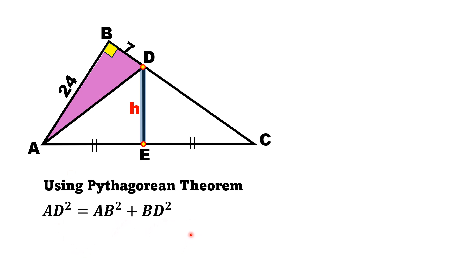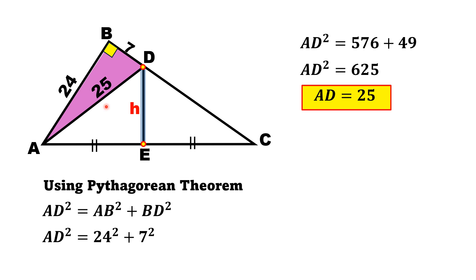AB is 24 and BD is 7. Substituting, AD² = 24² + 7² = 576 + 49 = 625. If we take the square root on both sides, we get AD = 25 units.